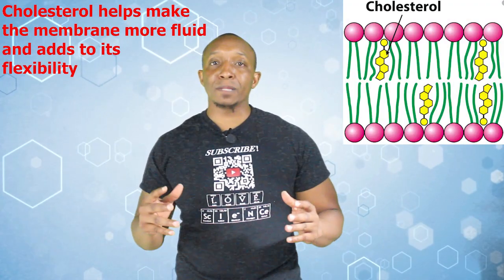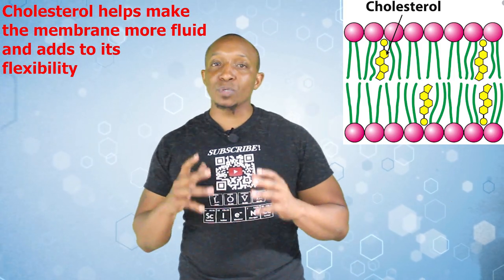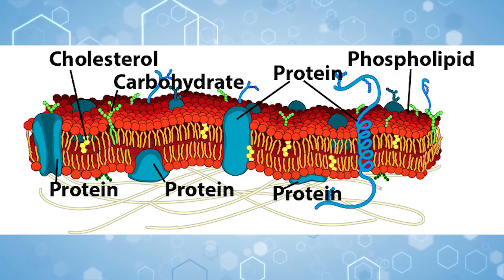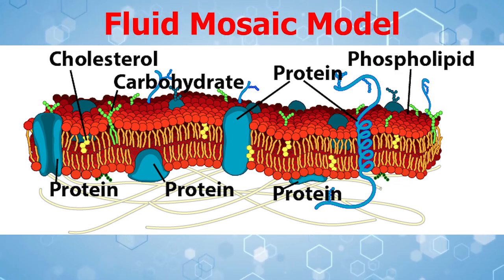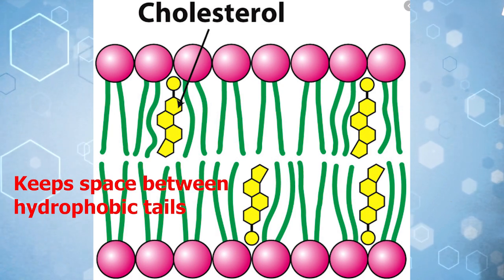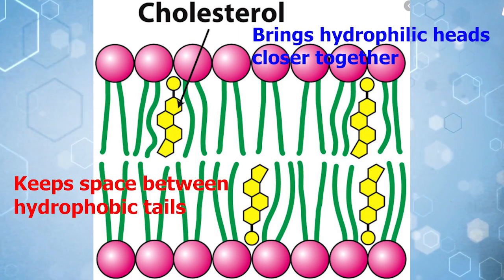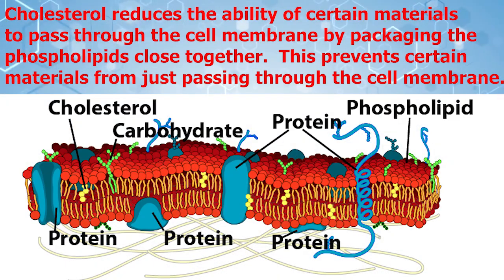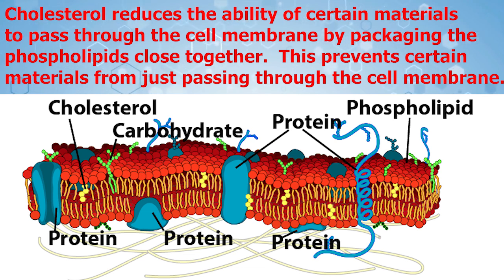Cholesterol is another type of lipid that plays a huge role in the cell membrane. It helps make the membrane more fluid and adds to its flexibility in movement. Cholesterol is what helps give the cell membrane the name fluid mosaic model, by keeping enough space between the hydrophobic tails while bringing the hydrophilic heads closer together. This brings us to cholesterol's most important function, which is reducing the permeability — or ability of certain materials to pass through the cell membrane.